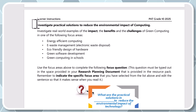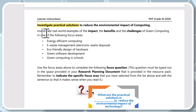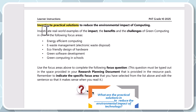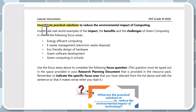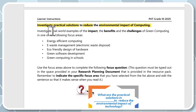You need to investigate practical solutions — this means research. Use the internet, books, or speak to people such as an uncle or aunt involved in green technologies, or companies that have adapted to green technologies. For example, solar power can reduce electricity needs. However, remember that when solar panel batteries wear out, that technology ends up in landfill, affecting another part of our environment. So investigate practical solutions to reduce the environmental impact of computing.